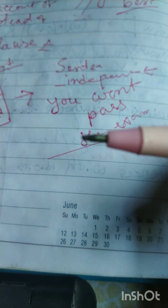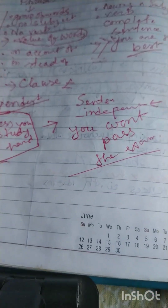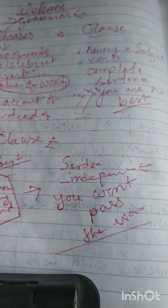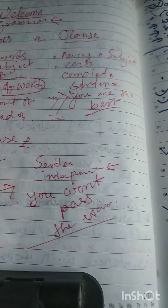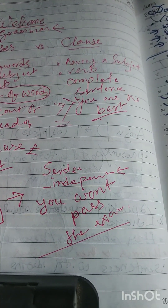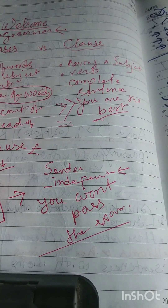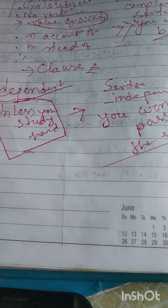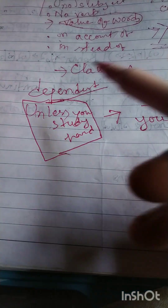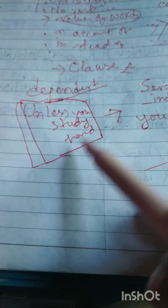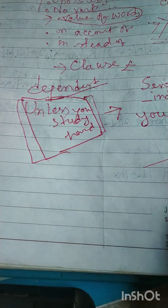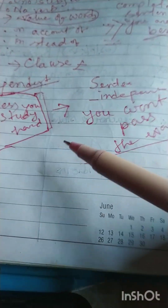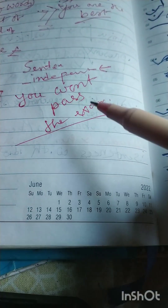In short, to recap: phrases are without a subject and without a verb — just a group of words with no meaning on their own. A clause has a meaning with a subject and verb. For example, 'you are the best' or 'I go to the cinema hall.' Clauses are two types — dependent and independent. 'Unless you study hard' is a dependent clause; it looks incomplete, something is missing. To complete it you use an independent clause: 'unless you study hard, you won't pass the exam.'